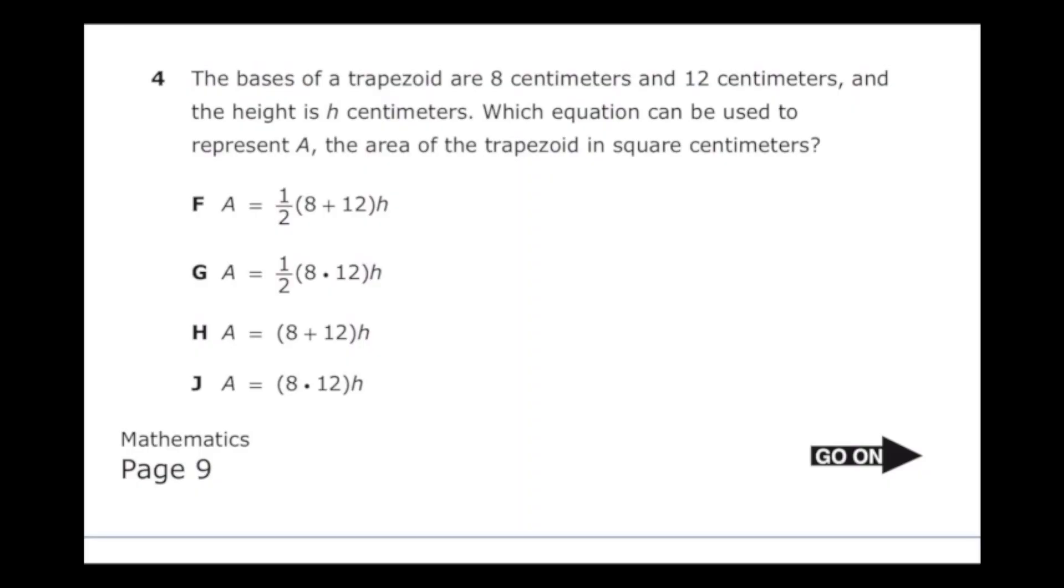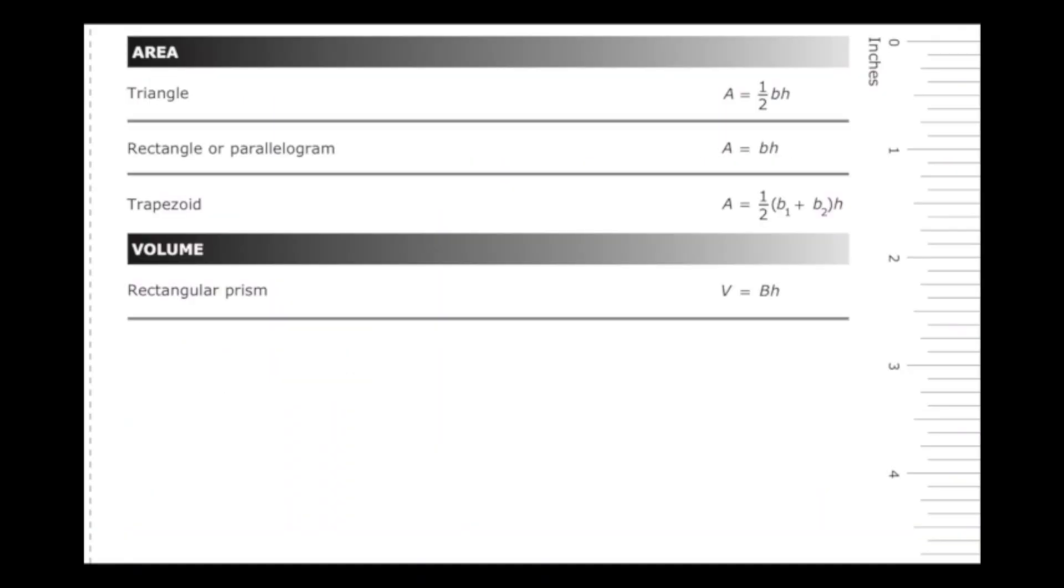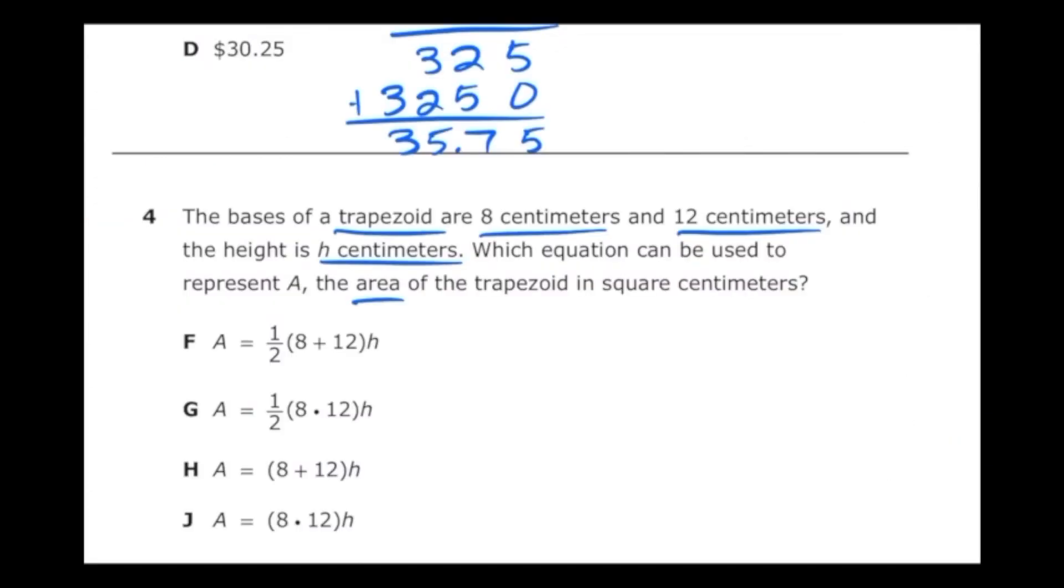Number 4 from the 2022 sixth grade math STAR test. The bases of a trapezoid are 8 centimeters and 12 centimeters, and the height is h centimeters. Which equation can be used to represent a, the area of the trapezoid in square centimeters? If you're not sure what the formula is for area of a trapezoid, we can just check our reference sheet, which you will have on the STAR test. We're going to see that the area of a trapezoid is equal to one half times parentheses base one plus base two times height. So going back to our problem, I'm going to write down one half times parentheses eight plus twelve and then times h, because we don't know what the height is. But if we look at our answer choices, we don't even have to work this out, so we can pick letter F.